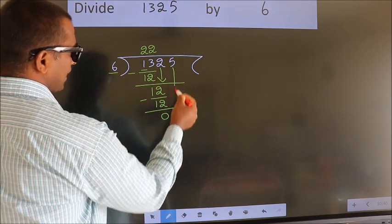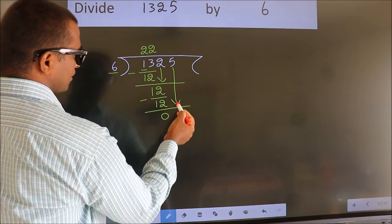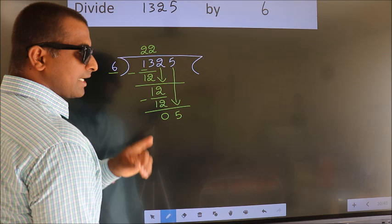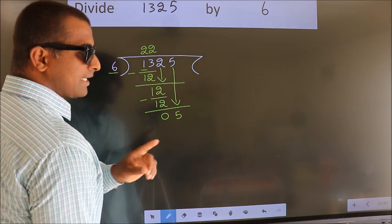After this, bring down the beside number. So 5 down. After this step, the mistake happens and the mistake is this.